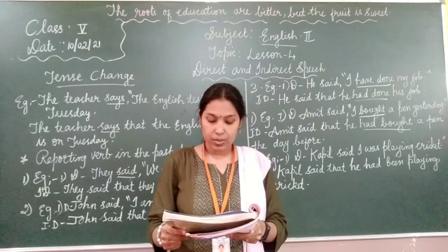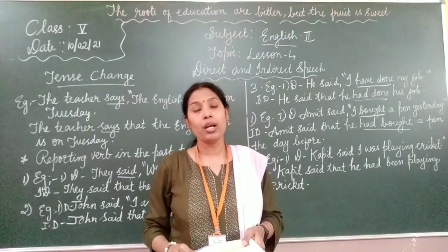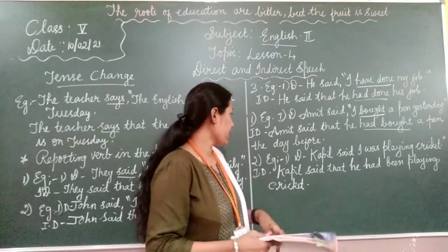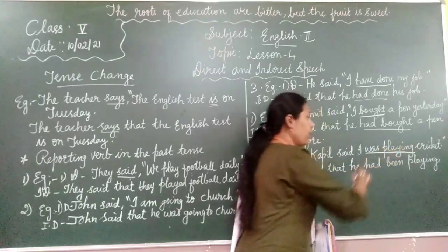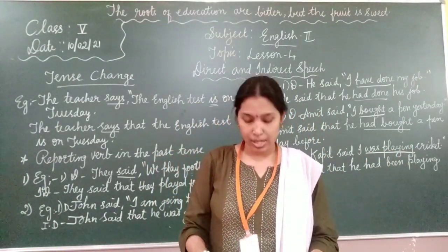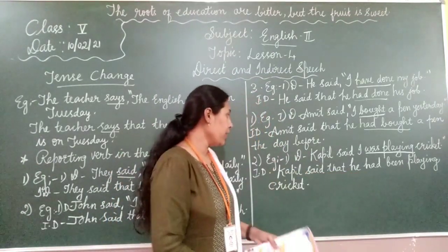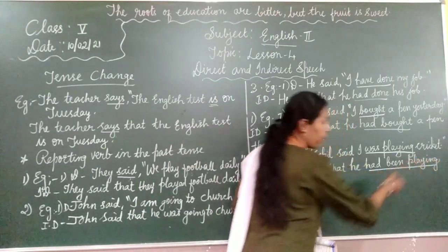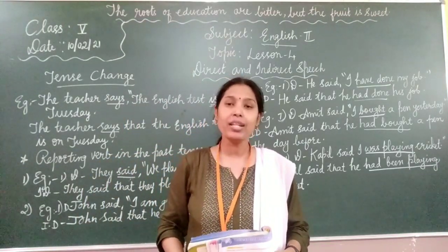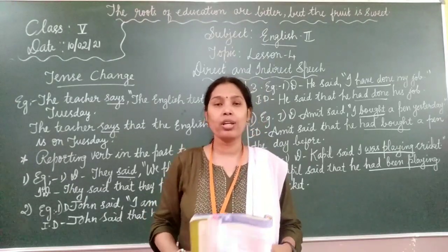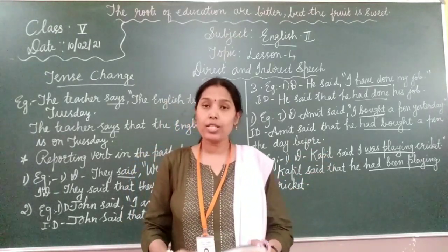Next: past continuous becomes past perfect continuous tense. If the direct speech is in past continuous tense, it changes to past perfect continuous tense. See the example: Khabib said, 'I was playing cricket.' Past continuous changes to past perfect continuous — Khabib said that he had been playing cricket. 'Had been playing' is past perfect continuous: had + been + verb + ing.